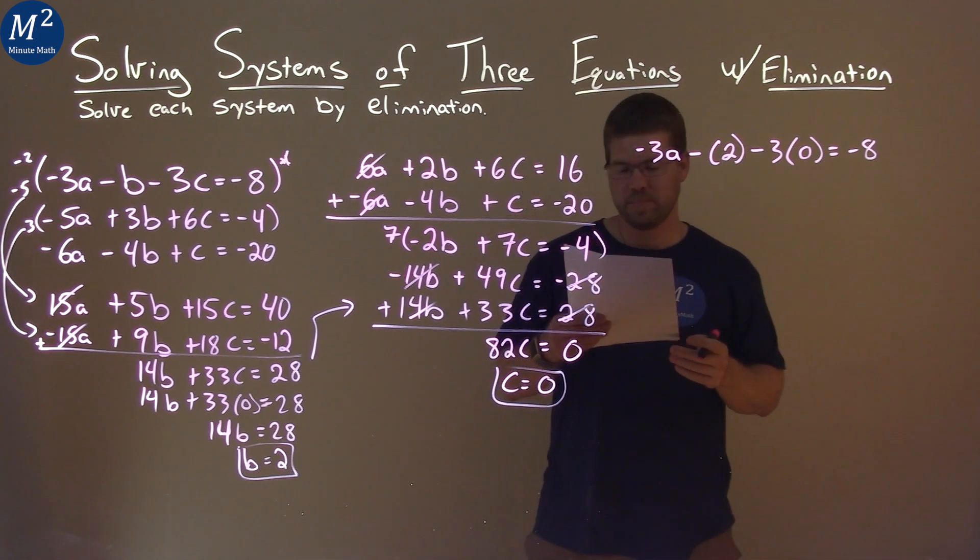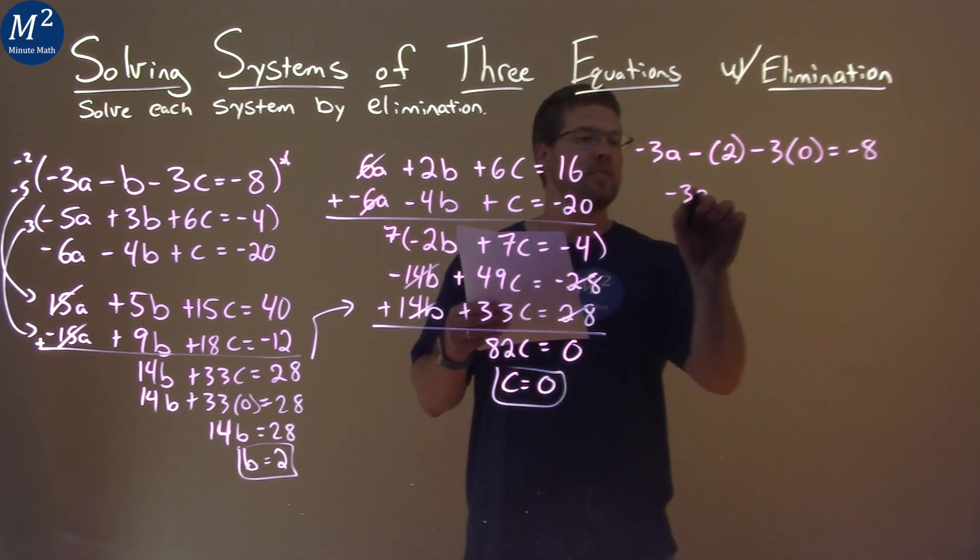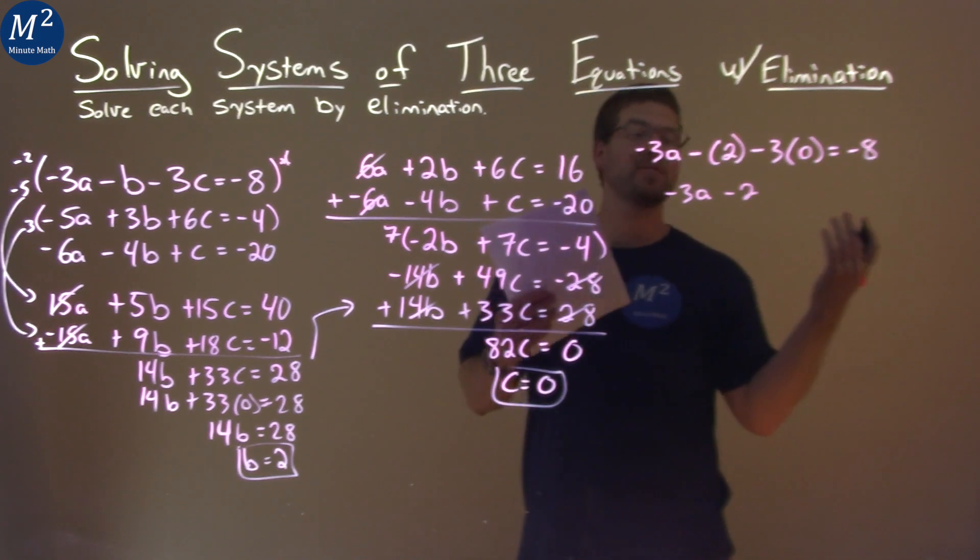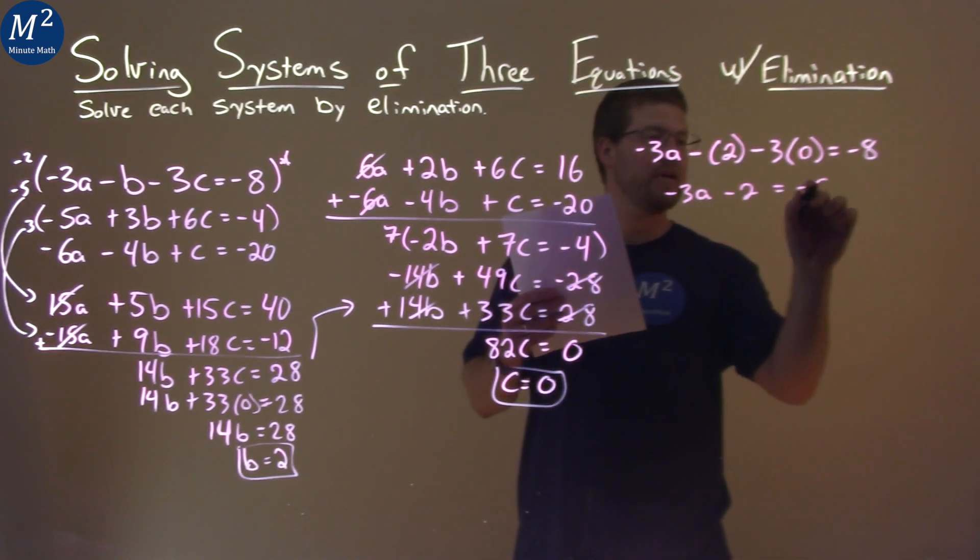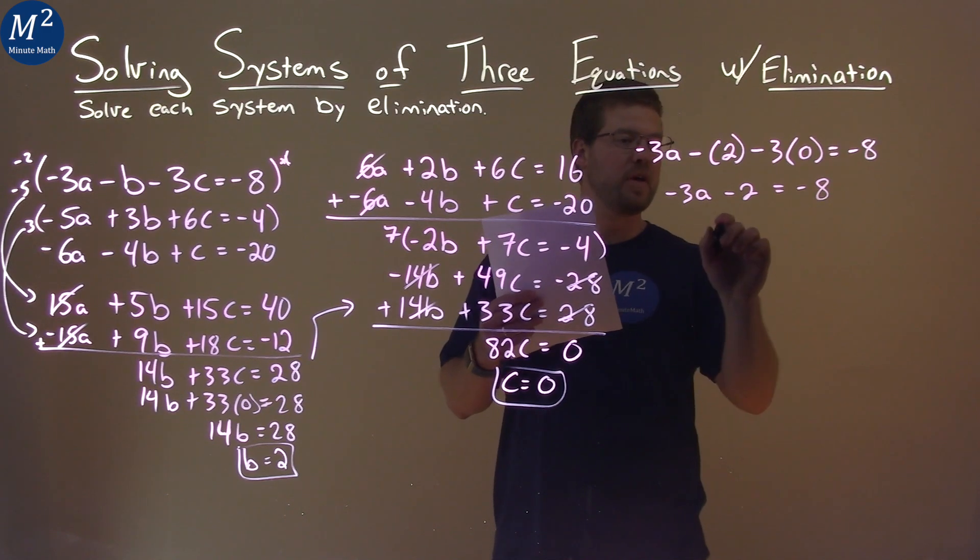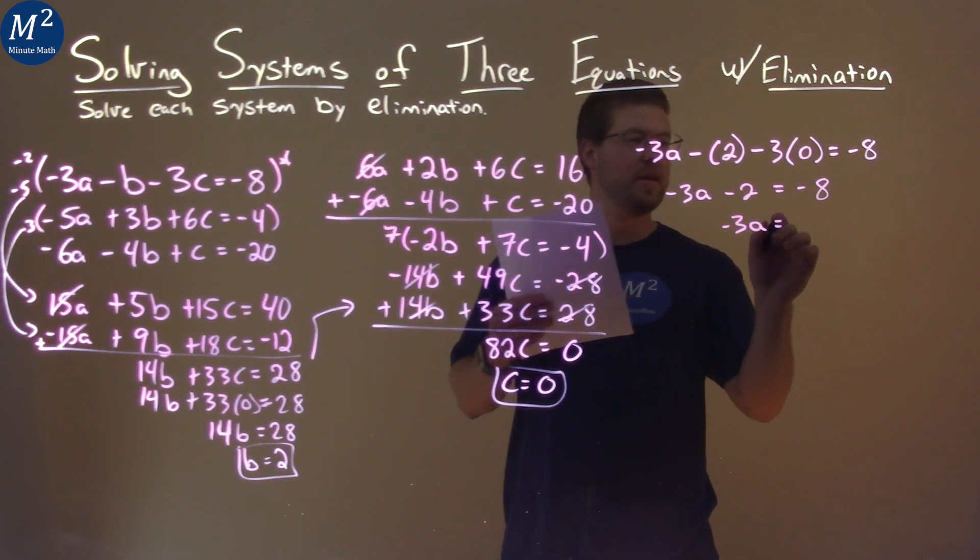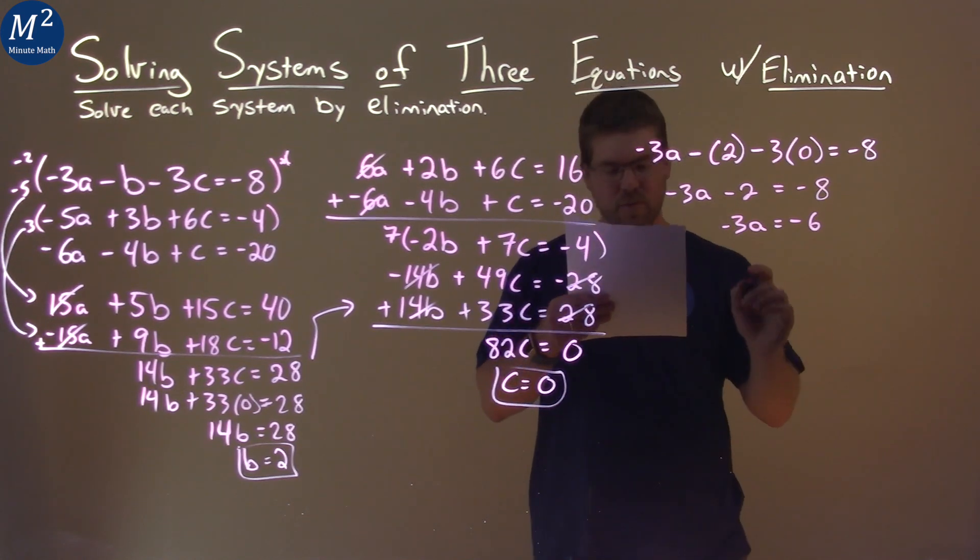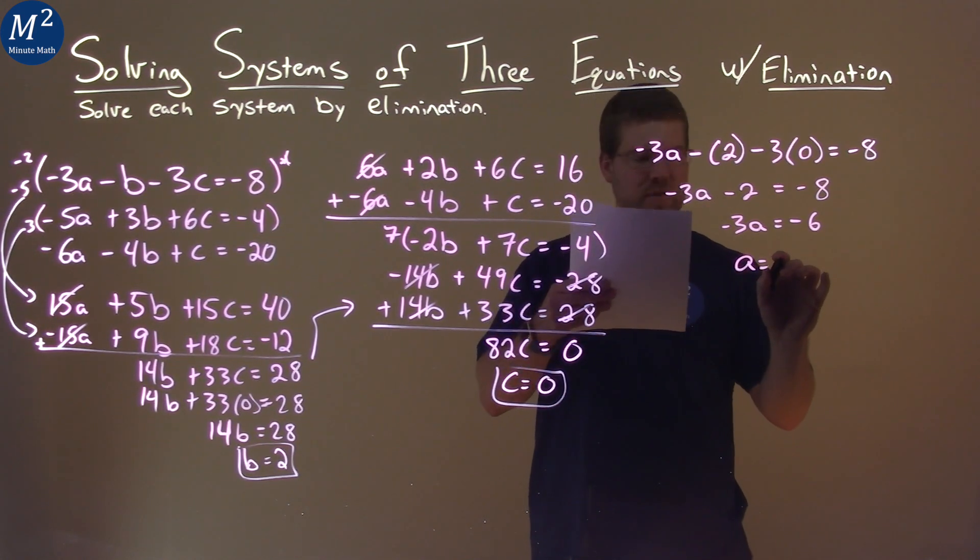Negative 3a comes down, we have minus 2 here, and negative 3 times 0 is just 0, and that equals negative 8. Add 2 to both sides, and negative 3a equals negative 6. Divide both sides by negative 3, and a is positive 2.